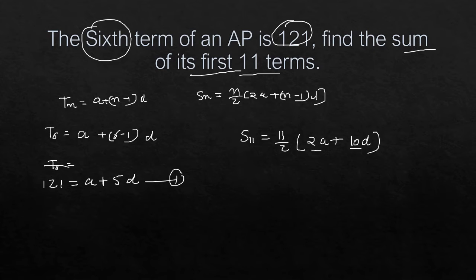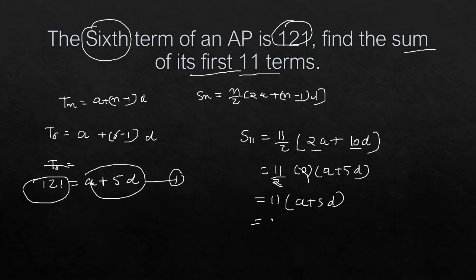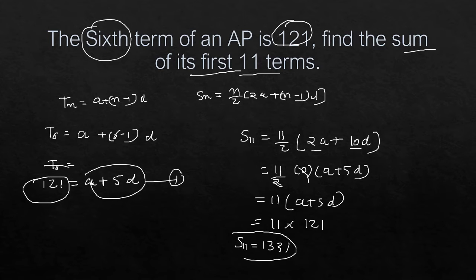From equation one, a + 5d = 121. So we substitute: S_11 = 11 × 121. Calculating 121 × 11 gives us 1331. Therefore, the sum of the first 11 terms is 1331.